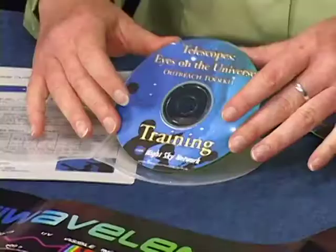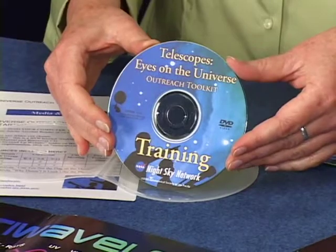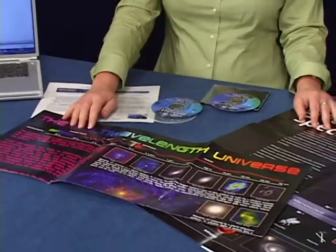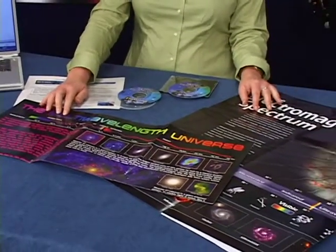The media and resources bag includes this training video as a DVD. This is for training your club members on the use of this toolkit, some posters on multi-wavelength astronomy which can be used for a number of activities.